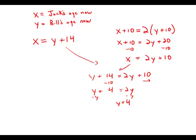If Y equals 4, X equals 18. This makes sense because if Jack is 18 now and Bill is 4 now, in 10 years when Jack is 28 and Bill is 14, Jack will be twice as old.